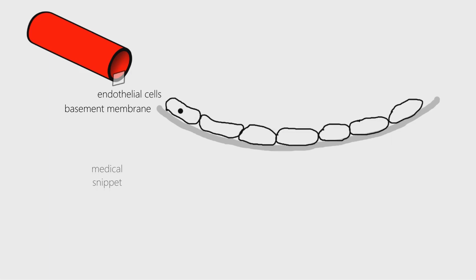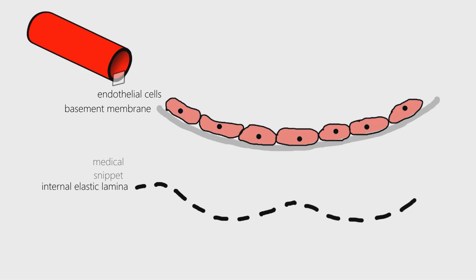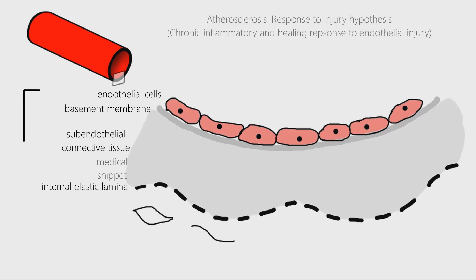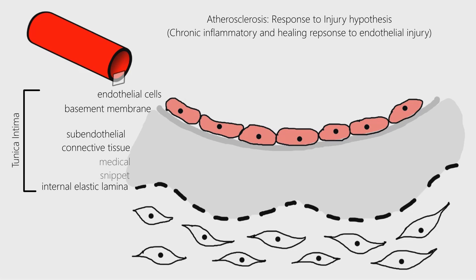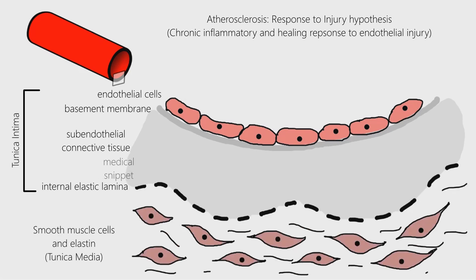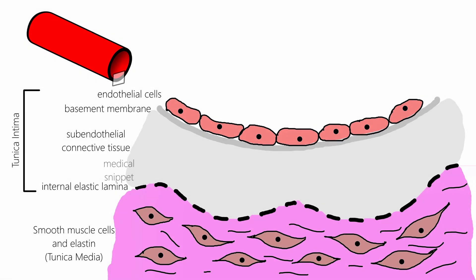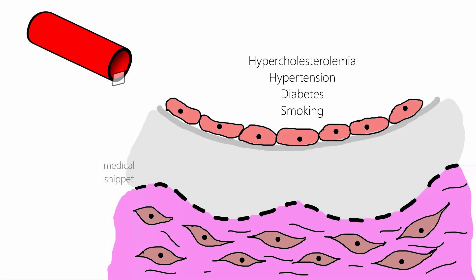Let's draw the microscopic image of a part of the coronary artery to discuss the pathogenesis of atherosclerosis. Atherosclerosis is a chronic inflammatory and healing response of the arterial wall to endothelial injury. The main reasons for endothelial injury are risk factors like hypercholesterolemia, hypertension, diabetes, and smoking.